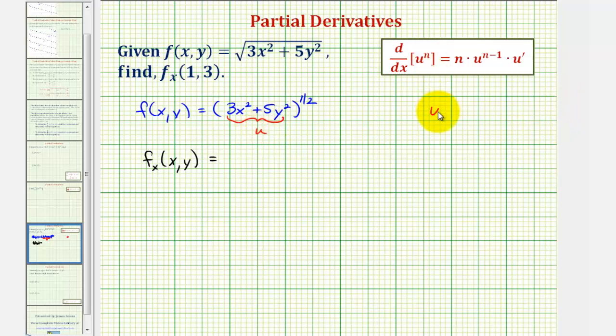So if we let u equal 3x² + 5y², we'll have to find u prime, the derivative of u with respect to x. So we'll treat y as a constant, so u prime would just be 6x.